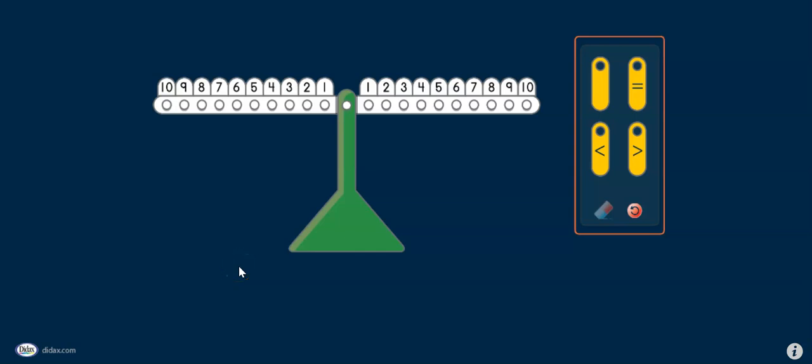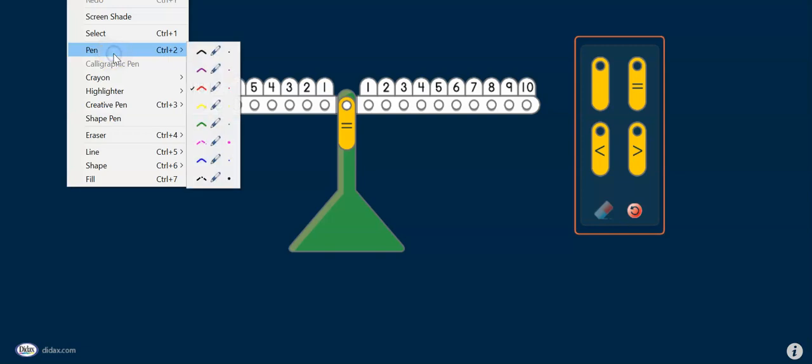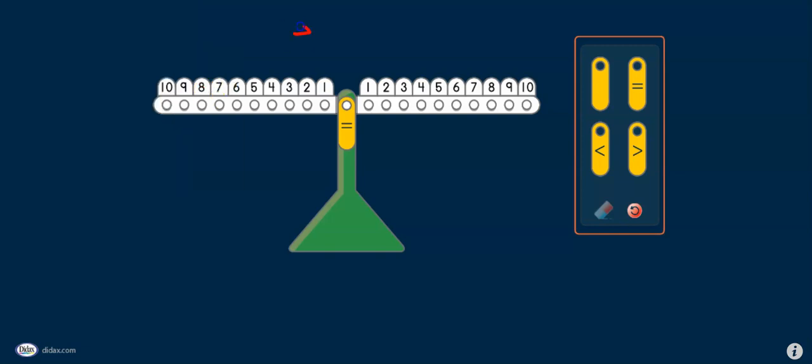Hi boys and girls. Today we're going to continue to explore the equal sign. So let's get the equal sign on our balance scale again. Remember what it looks like with one line on top of another, and this is an equal sign. I'm going to write the word equal. Can you say equal with me? Equal. Do you remember what equal means? That's right. It means the same.